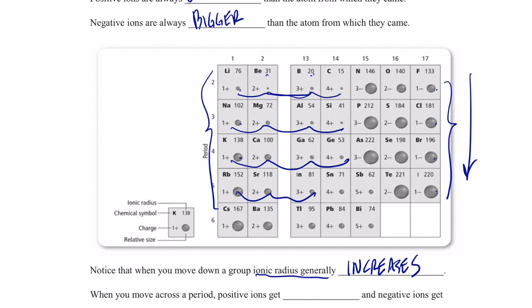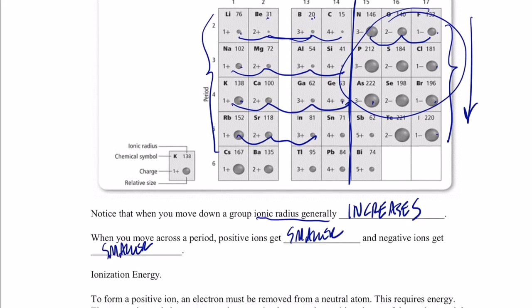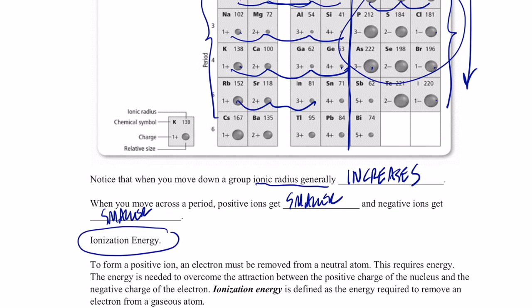Negative ions also get smaller as you go across a period - from 3- to 2- to 1-, they get smaller too. But notice there's a shift when you go from positive ions to negative ions: going from 4+ which is very small to 3- which is relatively large, because the proton-to-electron ratio changes significantly. Next time we'll talk about ionization energy - the energy required to remove an electron from an atom.